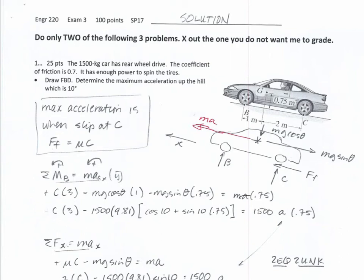This is the video solution for Exam 3, Spring 17. The first problem is a vehicle translation problem. Looking carefully at the wording, it says rear-wheel drive and we're looking for the maximum acceleration up the hill. Maximum acceleration implies we're at the slip condition, and because it is rear-wheel drive, we're looking for the slip condition at point C. Maximum acceleration occurs when slip occurs at C, meaning the force of friction equals mu times normal force at C.